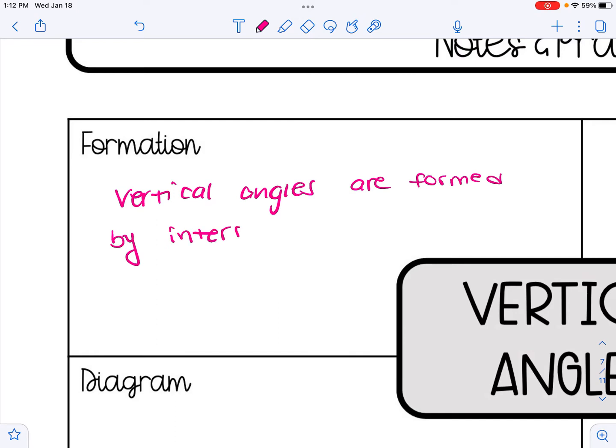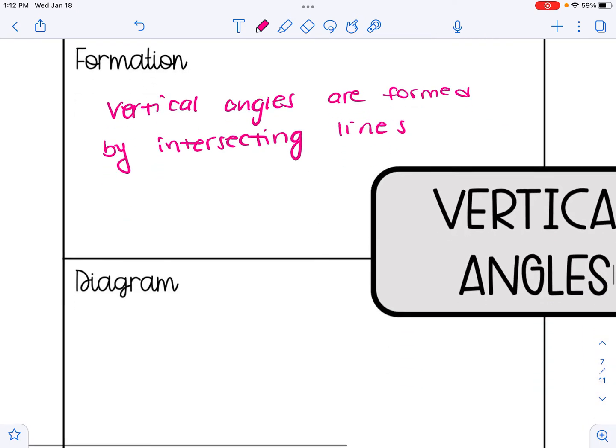You may remember that intersecting lines are two lines that cross. And here's a diagram to support what that would look like. In this diagram, there are two intersecting lines, which gives us two pairs of vertical angles.